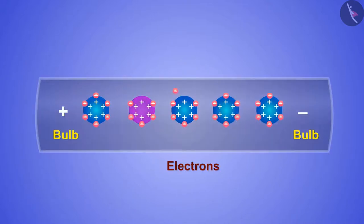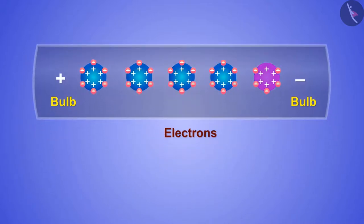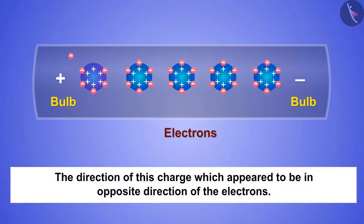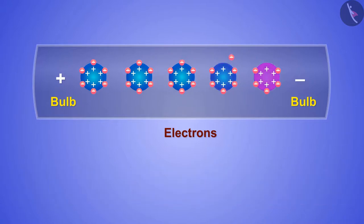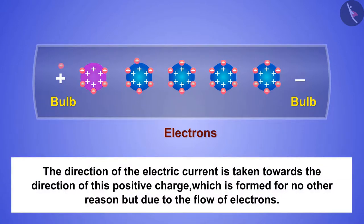Due to the flow of electrons, a positive charge is generated in the metallic wires. The direction of this charge which appears to be in the opposite direction of the electrons, here the direction of the electric current is taken towards the direction of this positive charge, which is formed for no other reason but due to the flow of electrons.